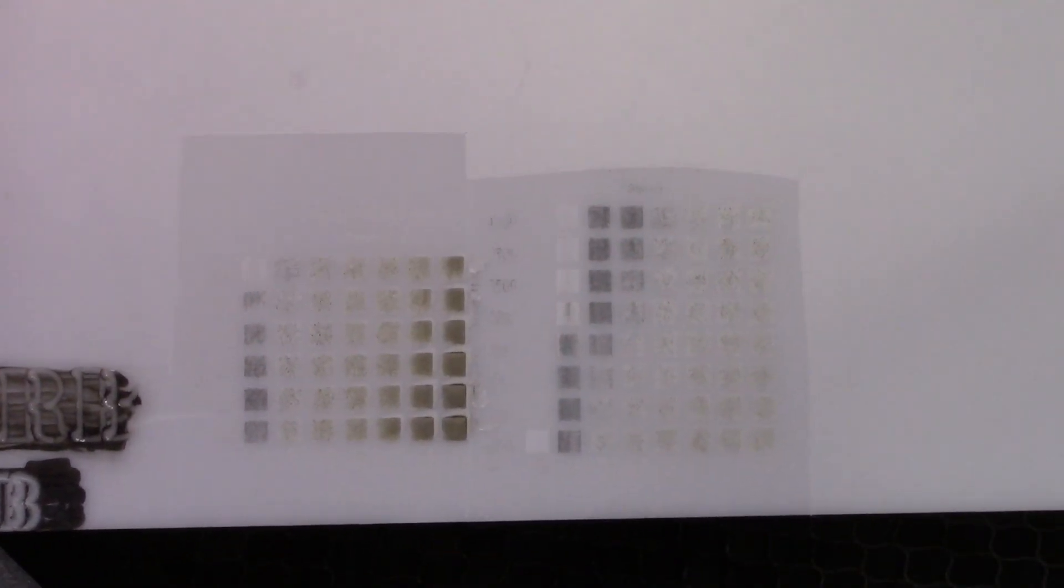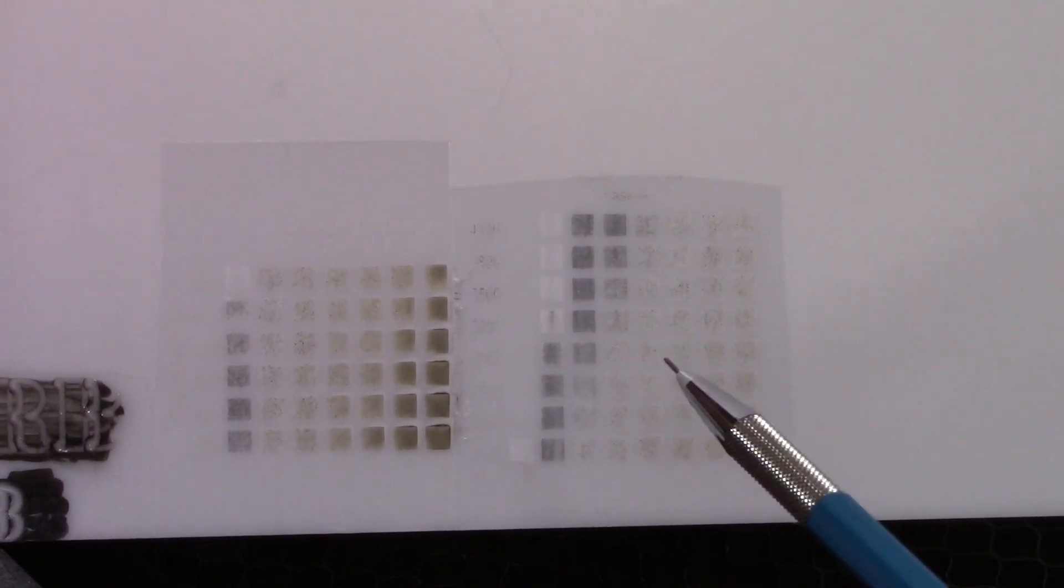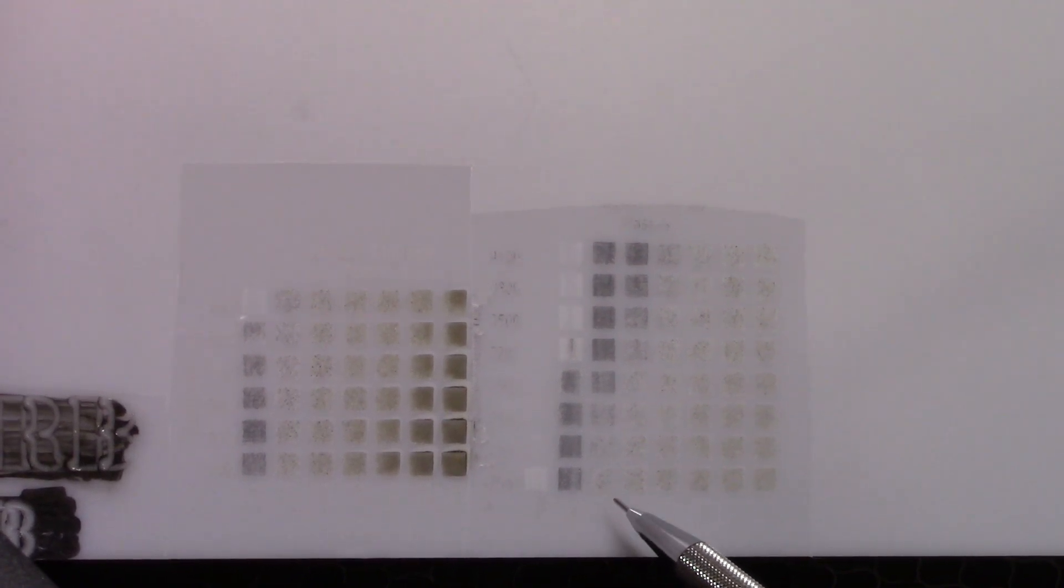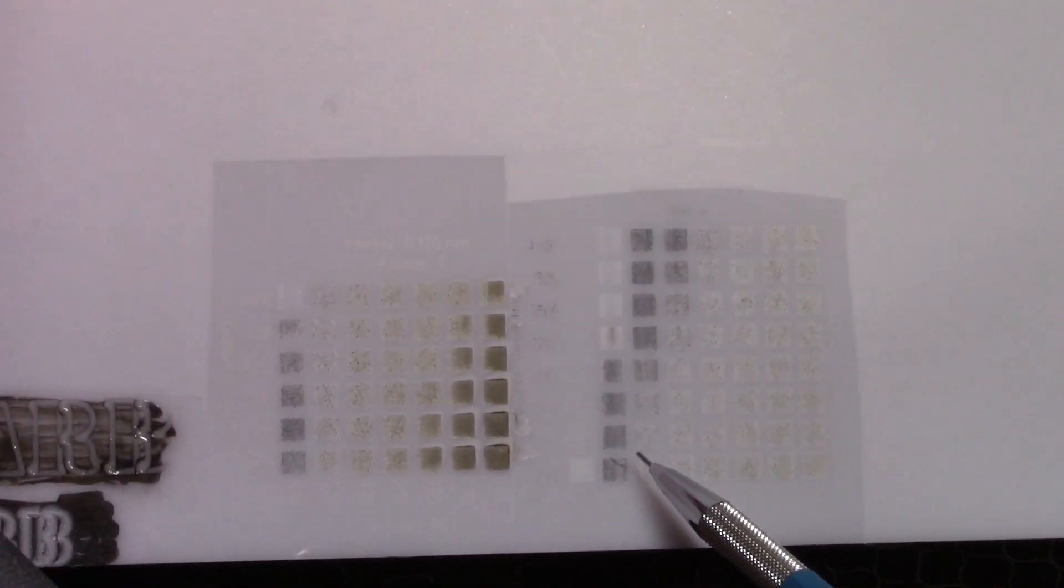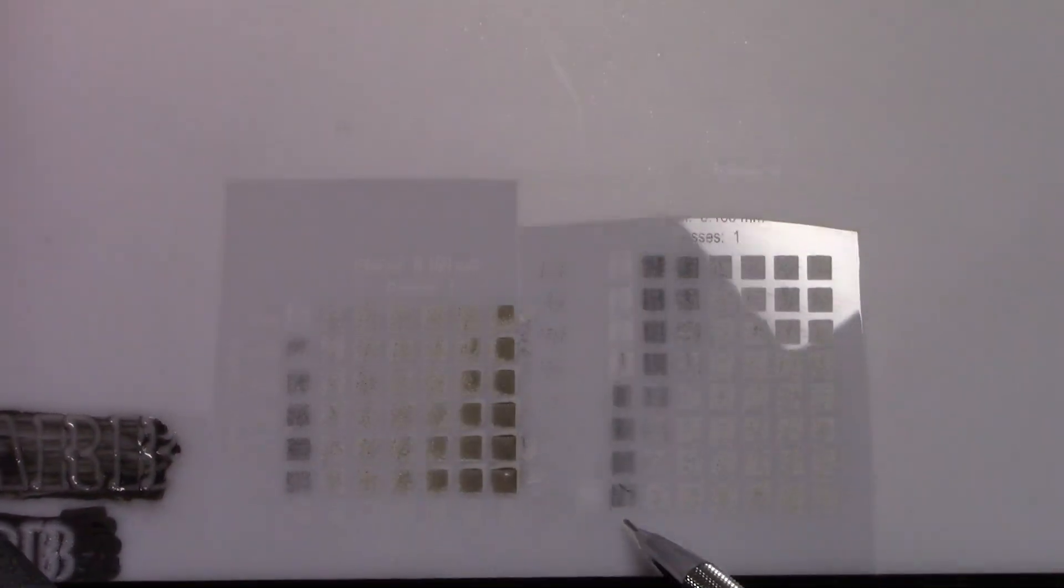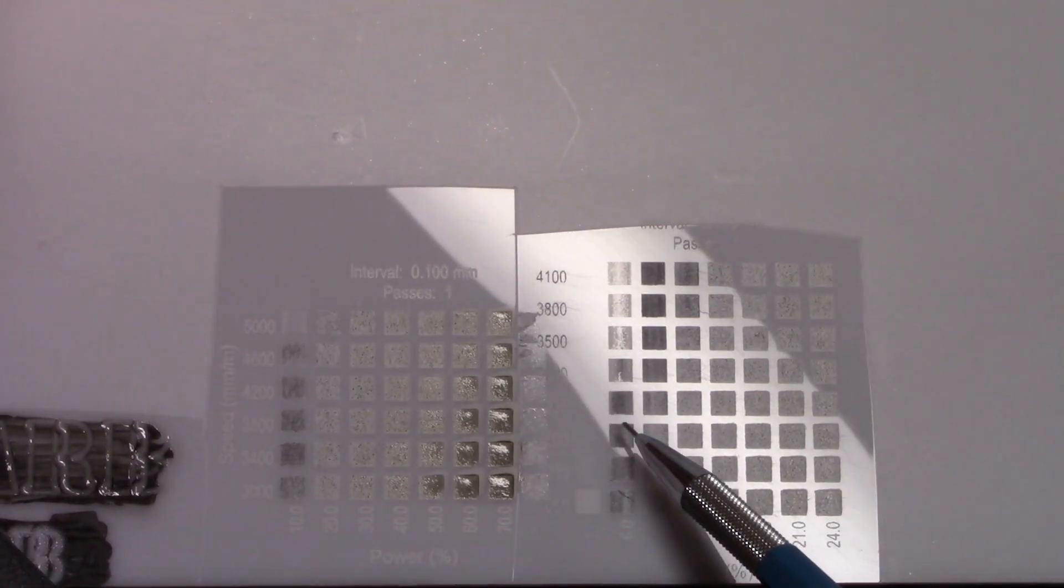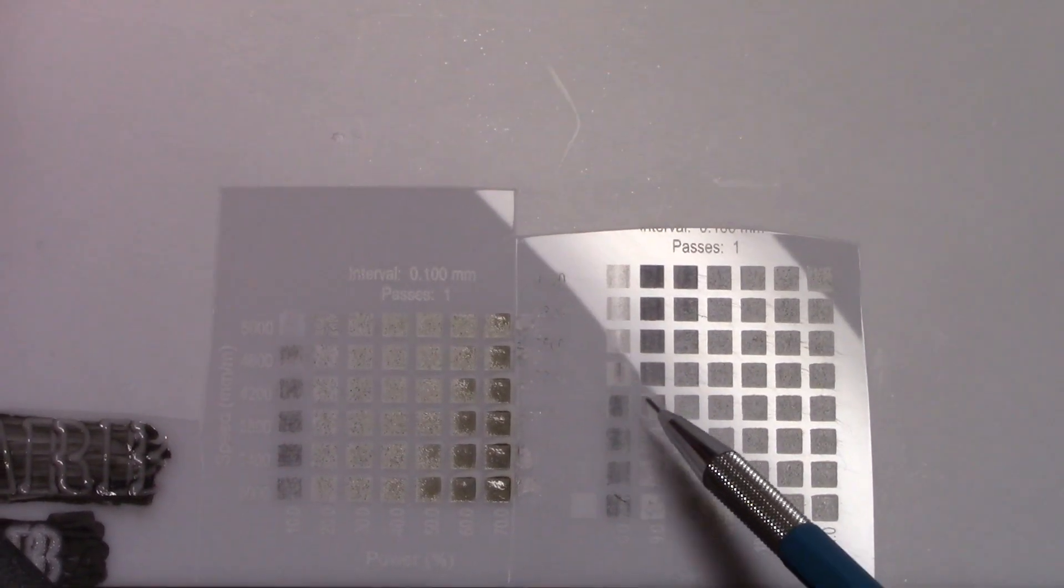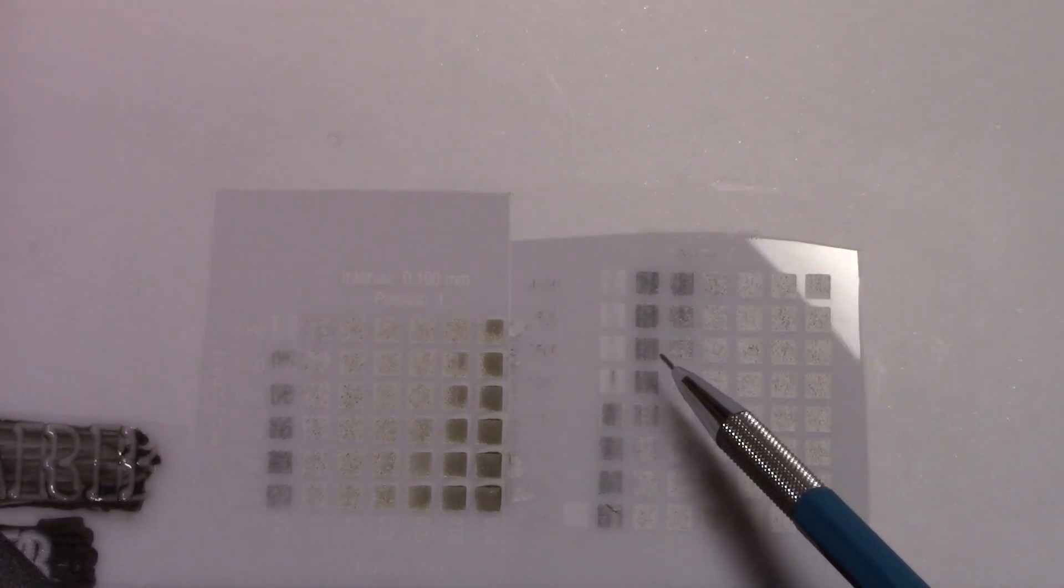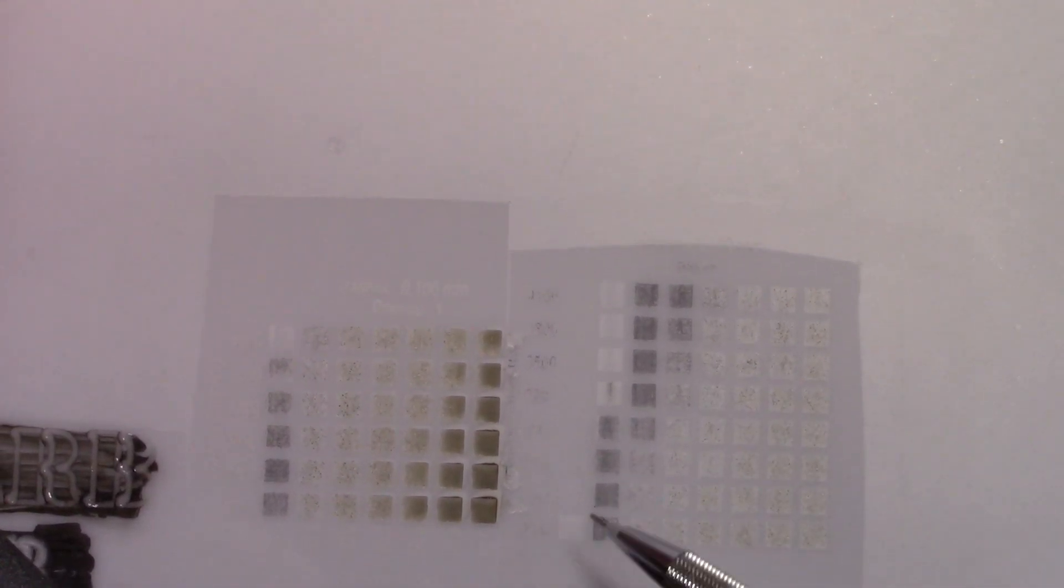So some interesting results here on those low power settings. Where I have six percent and nine percent, that column is the six percent column and it's actually starting to get some grayish black stuff. The speed was at about 2000, and then I went up to 2600 and was still doing okay. And we go over here to the nine percent at the 3200 and 3500, all the way up to the 4000.